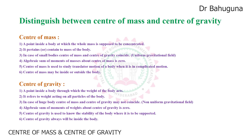Fifth point in center of gravity: center of gravity is used to know the stability of the body — where it is to be supported. If the center of gravity is very close to the ground, the vehicles when they are moving are very safe. Center of gravity explains the stability of the body while moving on the road. Center of gravity should always be very close to the ground level for more stability.